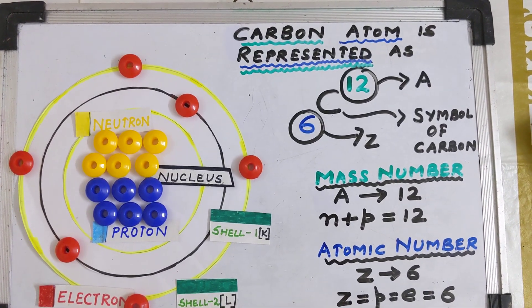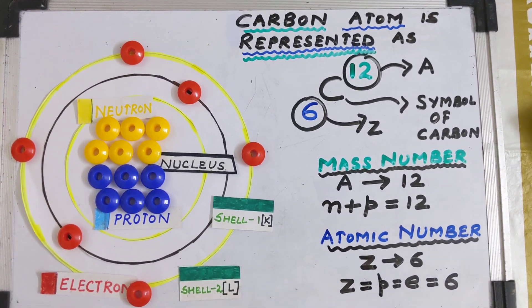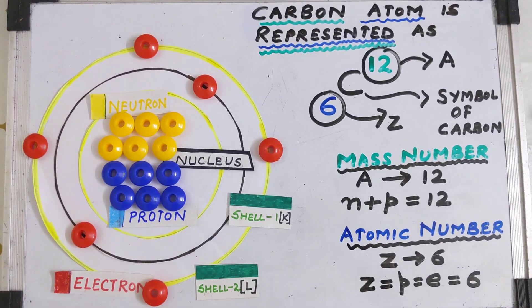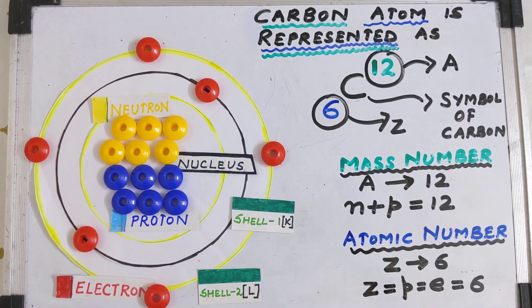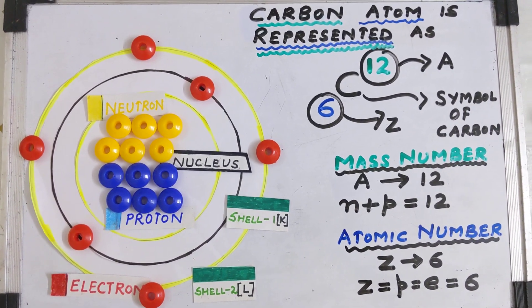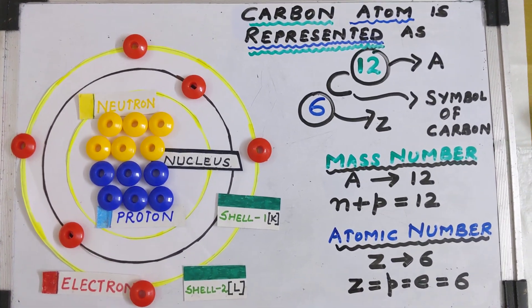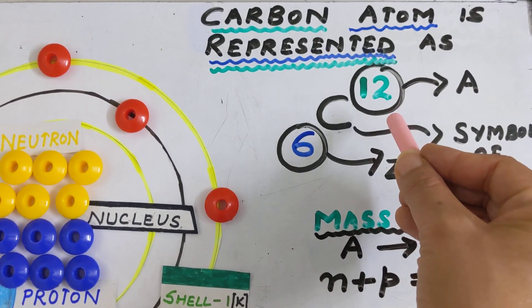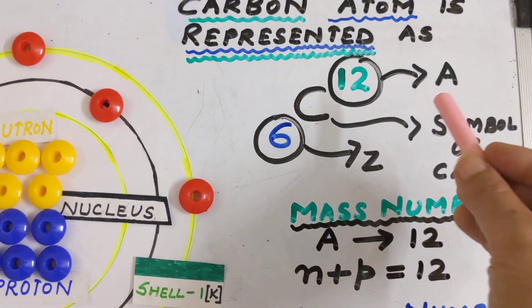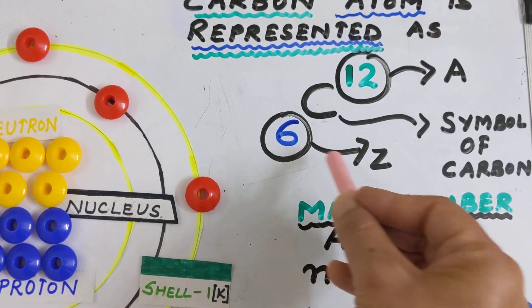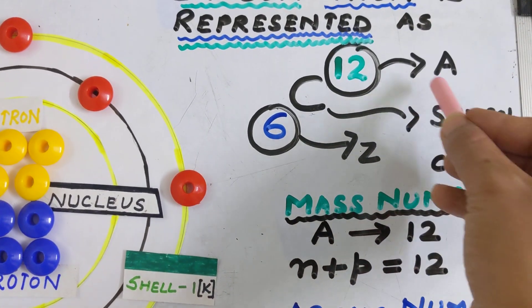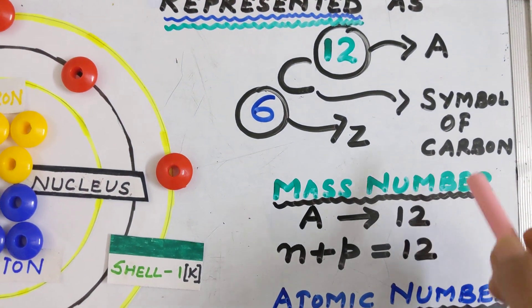Let us understand this by taking the example of the carbon atom. The orbital structure of the carbon atom is shown in front of you, where the nucleus is represented with the help of beads. Neutrons are shown with yellow beads, protons with blue beads, and electrons with red beads in different shells. The carbon atom is represented as C, with a number at the top — the superscript A — and a number at the bottom — the subscript Z. C is the symbol of element carbon.